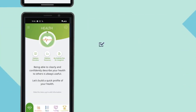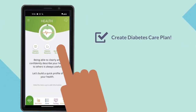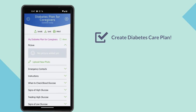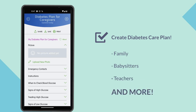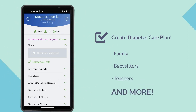With the MyCare app, you can create a diabetes plan. This gives you the option to create a personalized health plan which you can share with family, babysitters, teachers, and more. This will have all the important information they need to provide better care for you or your child's diabetes.